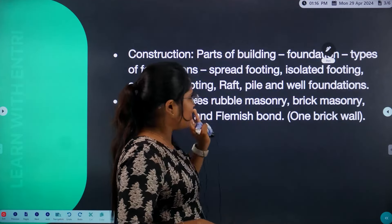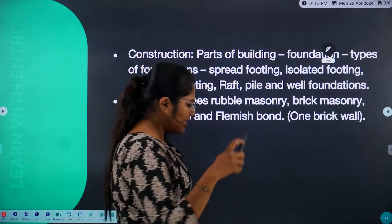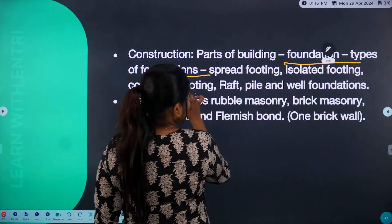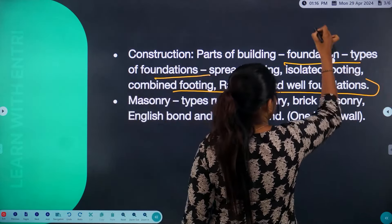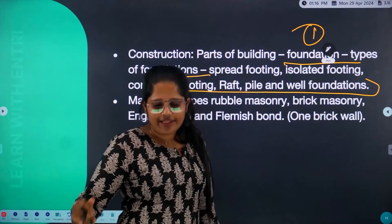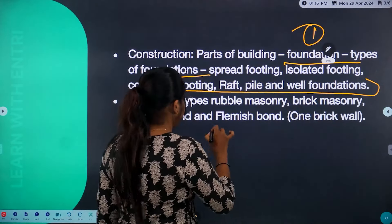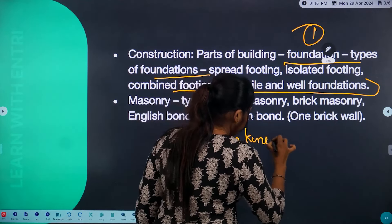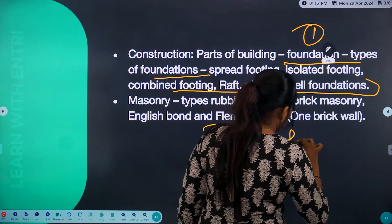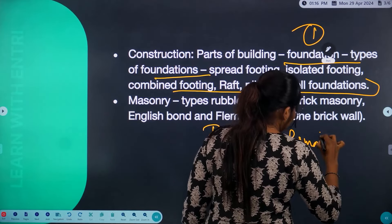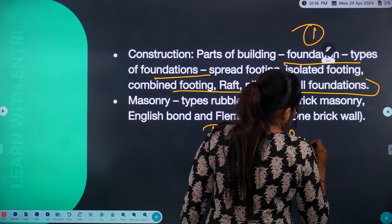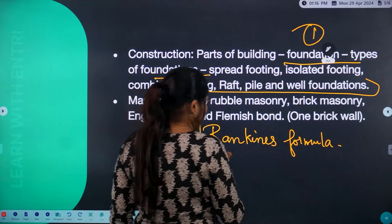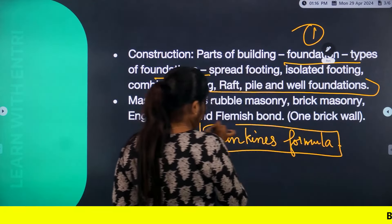Let's talk about the building construction. This is the type of foundation. The foundation is the first priority. You can also revise the foundation. There is Rankine's formula. The Rankine's formula — let's look at the Rankine's formula.